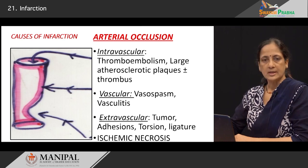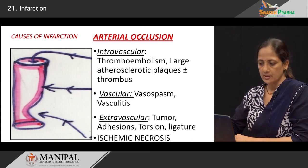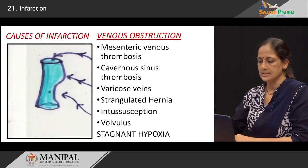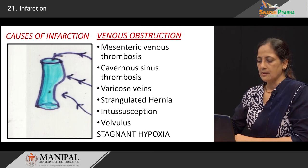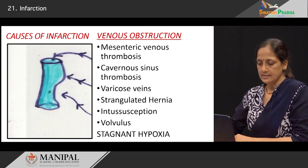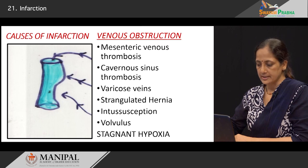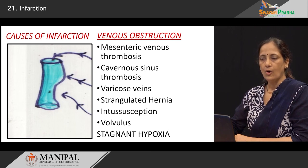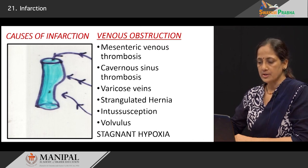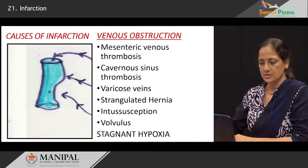Venous causes can similarly be divided into intraluminal causes like mesenteric venous thrombosis, deep vein thrombosis, or cavernous sinus thrombosis. Intramural causes include varicose veins and phlebitis. The extramural causes include strangulation, for example of a hernia, intussusception, or volvulus. In these situations, because of the blockage of the venous circulation, there is stagnation and hypoxia, which when prolonged results in infarction of the organ.